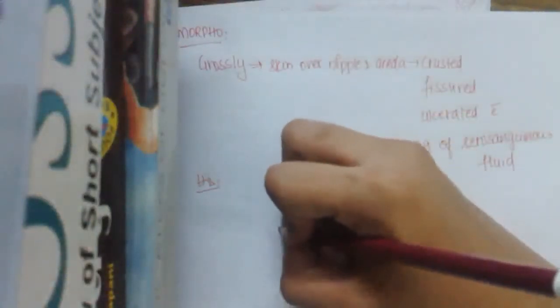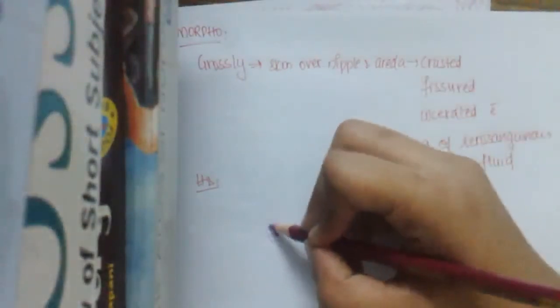The characteristic feature of Paget's disease is the Paget cell, which is present singly or in clusters. These Paget cells are larger than the epidermal cells, and they are spherical with a hypochromatic nucleus and a clear cytoplasmic halo.